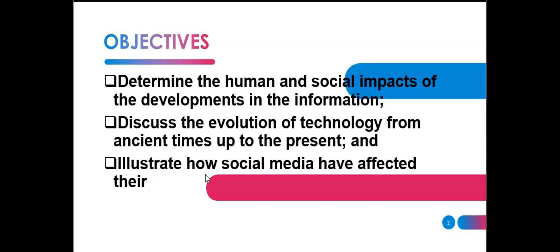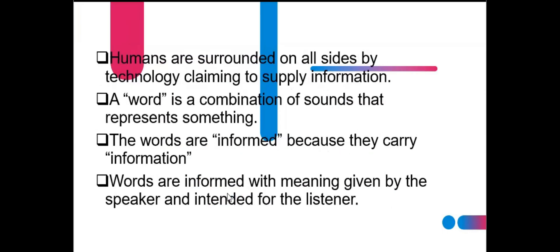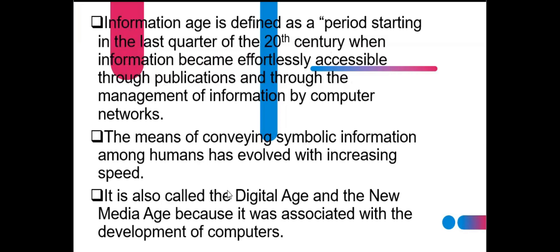We all know that our world is highly modernized, automated, data-driven, and technologically advanced nowadays, as evidenced by how information can be transferred quickly. The different areas of society have been influenced tremendously, such as communication, economics, industry, health, and the environment. The information age is the period starting in the last quarter of the 20th century when information became effortlessly accessible through publication and through the management of information by computer networks.